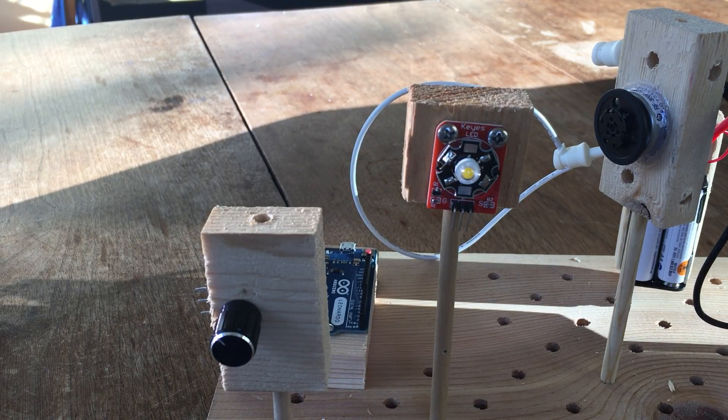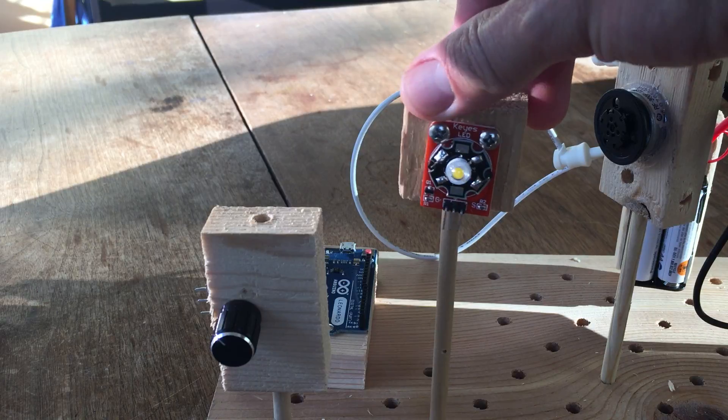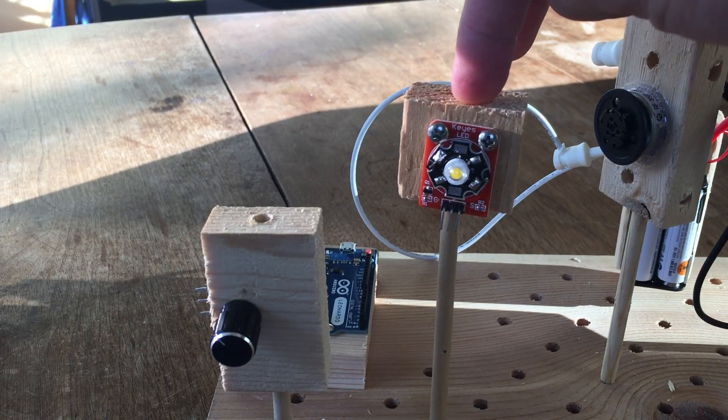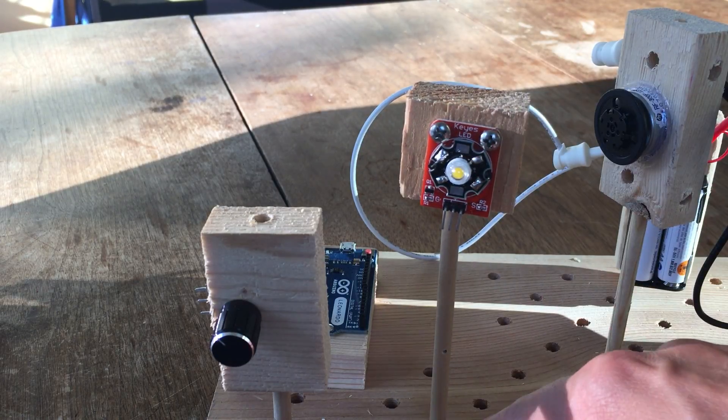This video will show you how to make the strobe circuit. First, take a 3-watt block and mount it towards the front of the board.